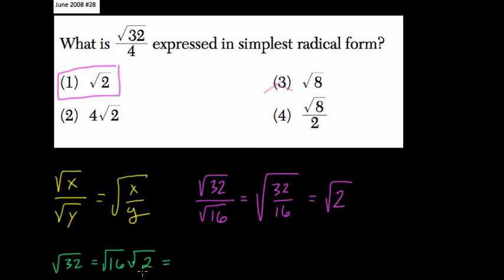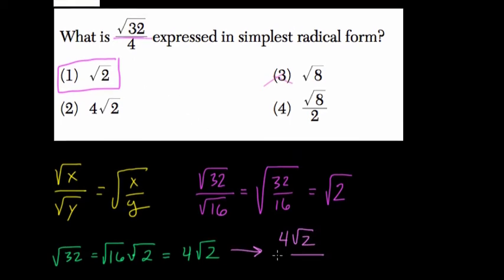Well, the square root of 16 is 4. The square root of 2 can't be broken down any further. So it equals 4 times the square root of 2. And what that does is it allows you to rewrite this whole fraction as 4 times the square root of 2 instead of the square root of 32 over 4.